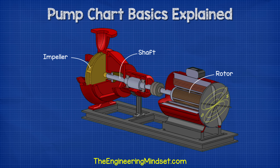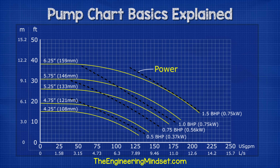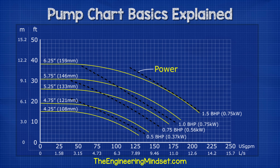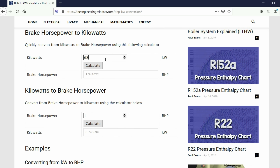Pump power. Pumps require mechanical power to spin the shaft, rotor and ultimately move the water. Pump manufacturers will usually provide a chart which plots the power requirement. In imperial units, we use brake horsepower and in the metric system, we use kilowatts. With this chart, we see the brake horsepower plotted at various intervals — as the flow rate increases, so does the power requirement. We use this chart to size our motor. For example, if we needed 125 gallons per minute with 18 feet of head, then this is between the 0.75 and the 1 horsepower lines. As this point is above the 0.75 line, this means we can't use a motor of this rating. Therefore, we will have to use a 1 brake horsepower motor, and we see the performance curve falls completely under this line. So if our head pressure calculation is wrong, then we do have some safety margin. If you want to convert between brake horsepower and kilowatts, then check out our free calculator, links down below.